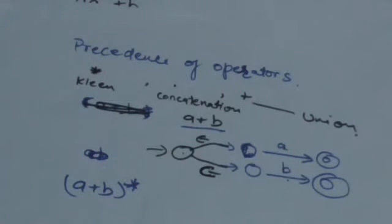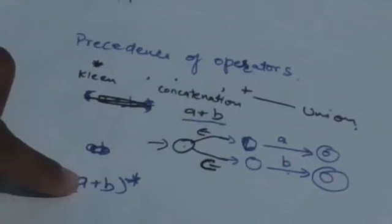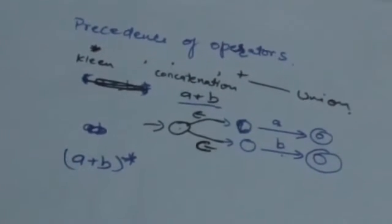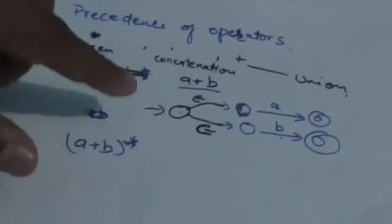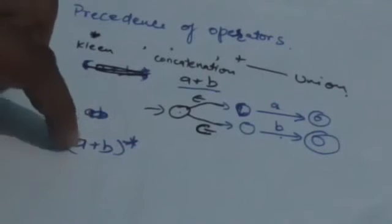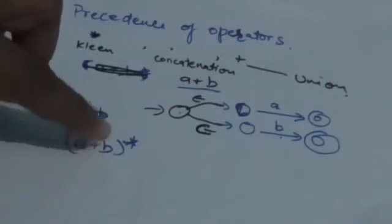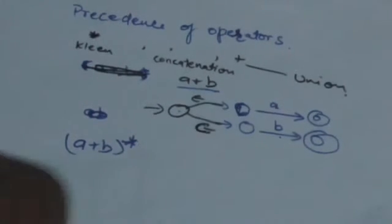So this automaton corresponds to the regular expression a plus b. Now we have to design a finite automaton corresponding to the regular expression a plus b Kleene star. So first of all we will make a finite automaton corresponding to the regular expression a plus b.